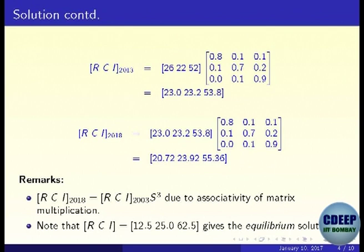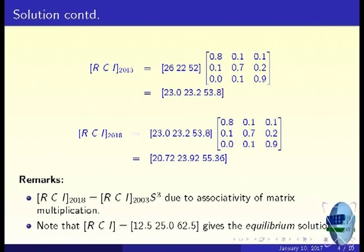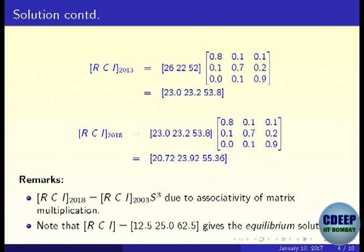You can see that the residential part is slowly decreasing: from 26% it becomes 23%, then 20.7%. Keep applying it and at infinity you are likely to get 12.5%. That is the equilibrium point — things slowly move towards equilibrium. Of course, this involves infinite processes which belong to analysis; we are doing only algebra, so we will not study infinite processes.